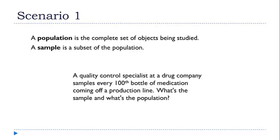So here I have an example of a simple data collection process. The quality control specialist at a drug company samples every 100th bottle of medication coming off a production line. In any scenario like this, the sample are the items that the pollster or the researcher is actually looking at or asking a question. So in this scenario, those are the every 100th bottle that are being pulled off the line and tested. The population, on the other hand, is the larger group that this sample came from. So in our medication scenario here, that would be all of the medications produced in the batch that the samples were taken from.